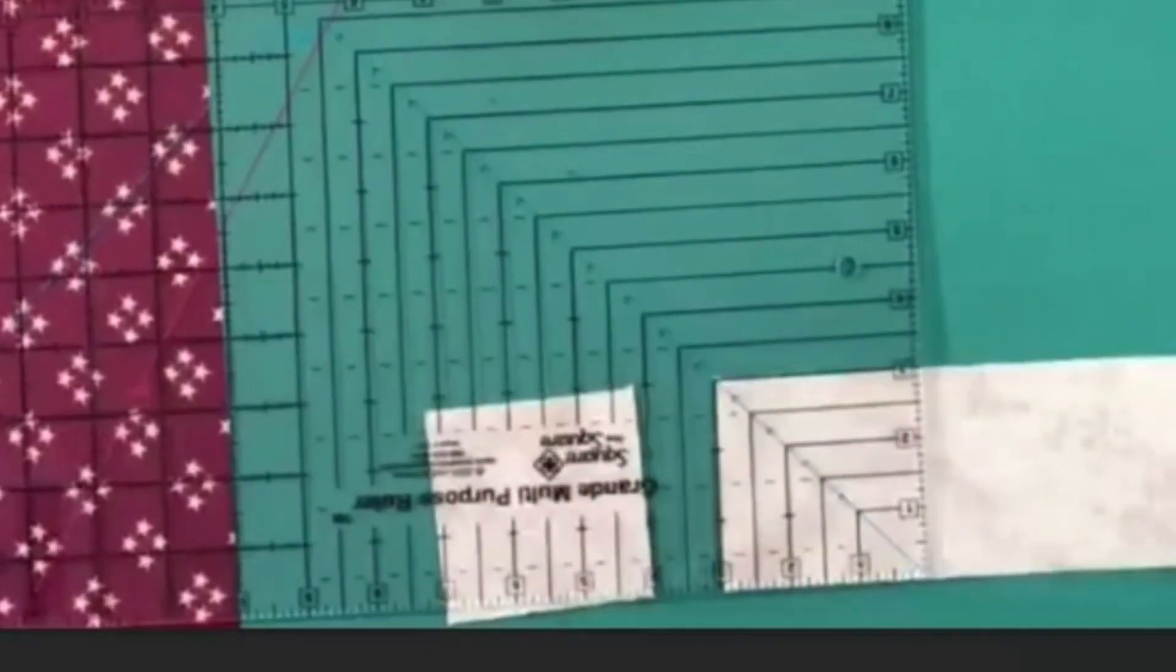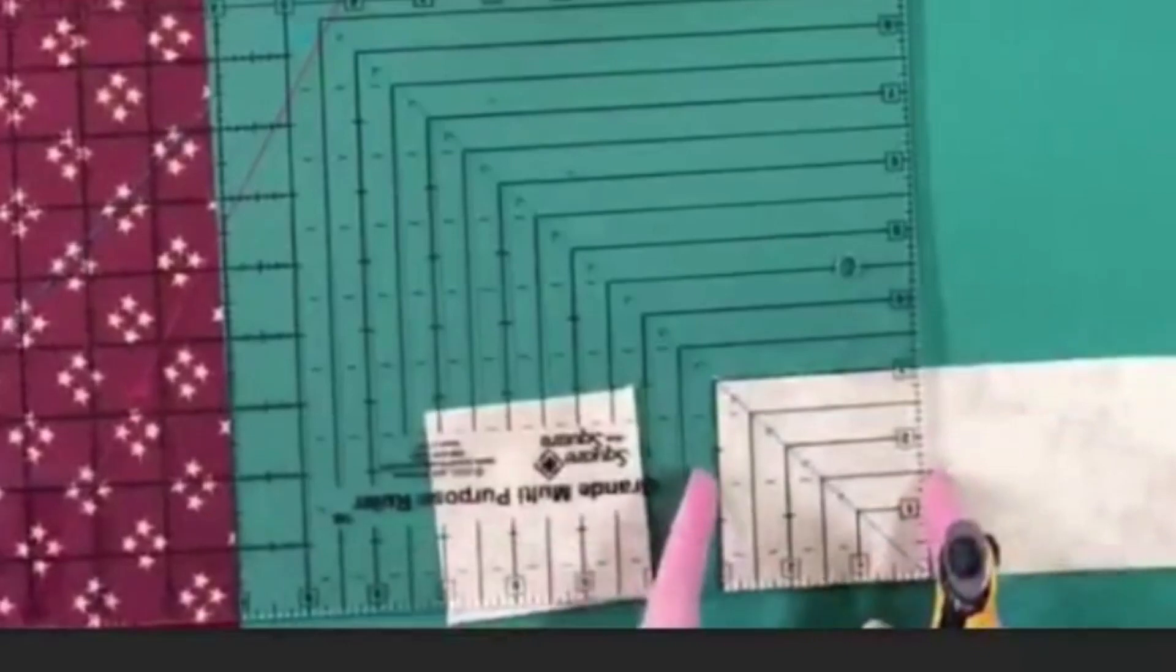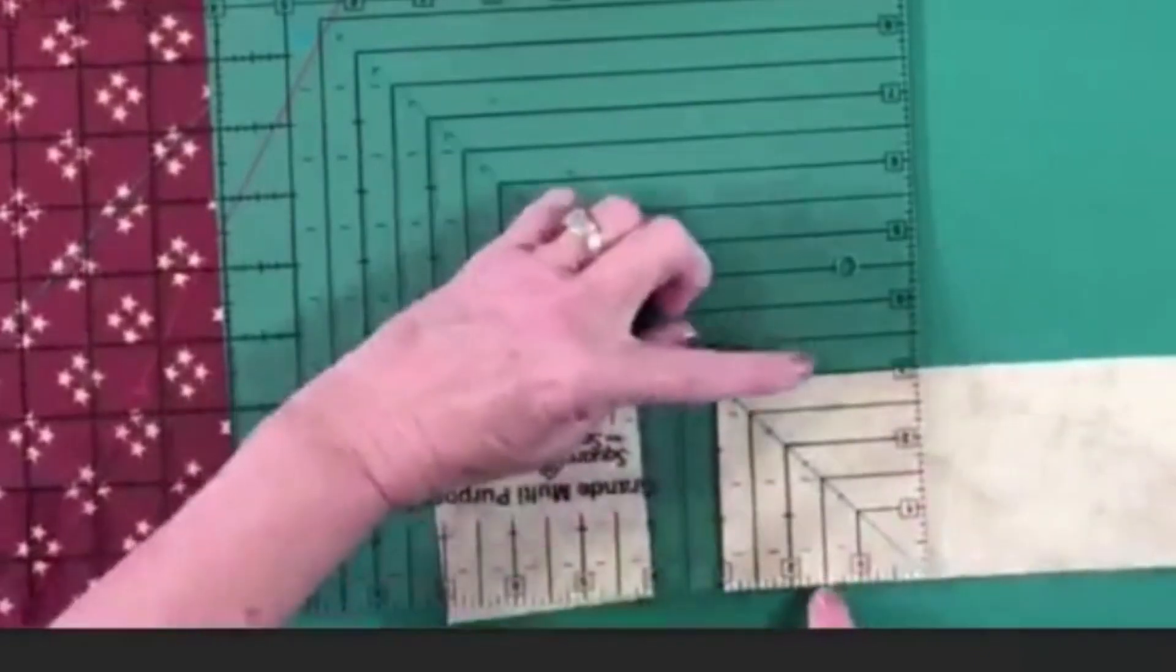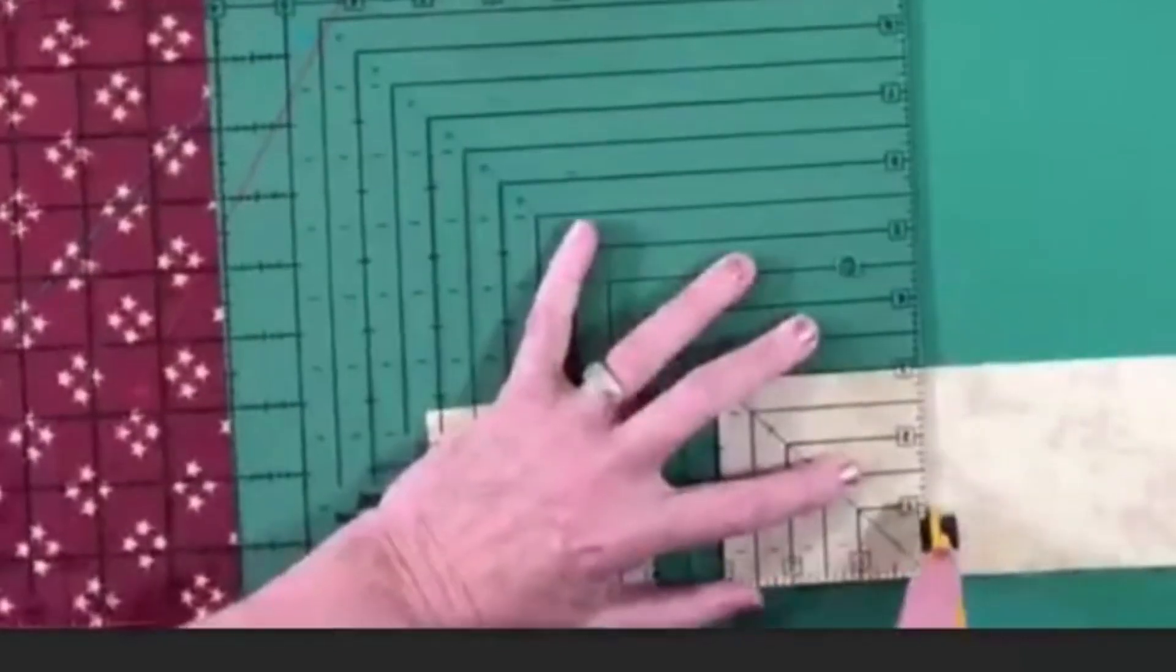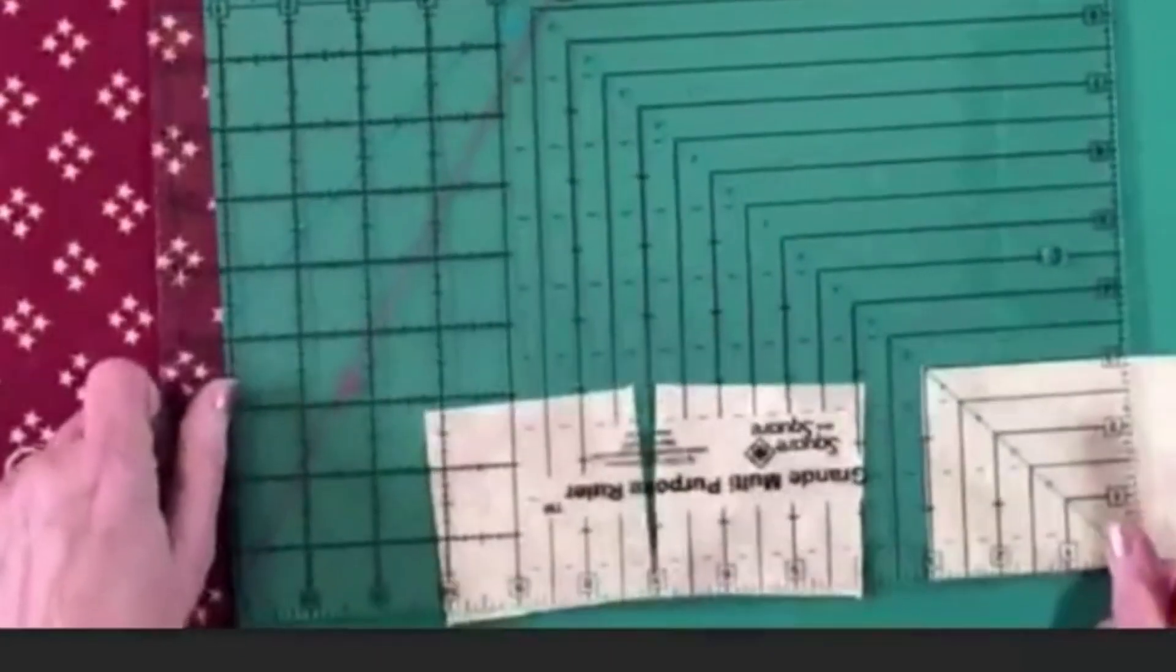Lots of times you're only measuring from here to here and you're not checking here and here. And therefore your square can get out of shape. And just come on in and keep cutting.